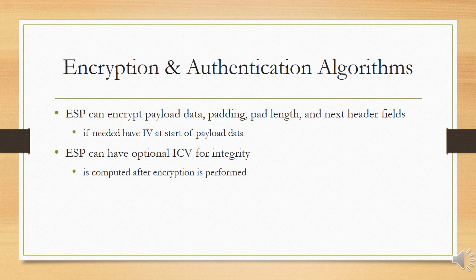For encryption and authentication algorithms, the payload data, padding, pad length, and next header fields are encrypted by the ESP service. If the algorithm used to encrypt the payload requires cryptographic synchronization data such as an initialization vector, these data may be carried explicitly by ESP at the beginning of the payload data field. If included, an initialization vector is usually not encrypted, although it is often referred to as being part of the ciphertext.